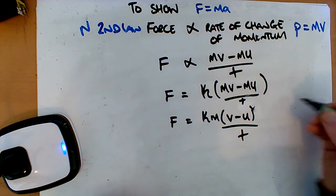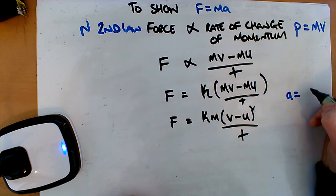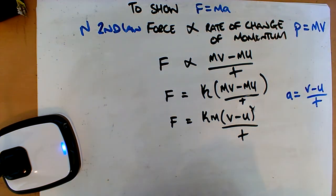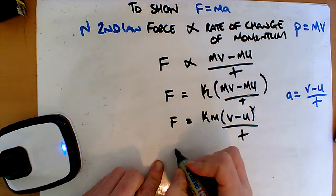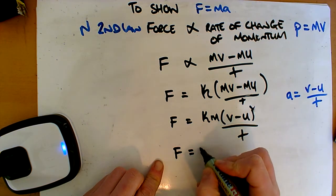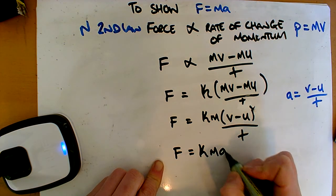If we remember, that was what our definition of acceleration was. Acceleration is the rate of change of velocity, V minus U over T. That's all that this is, the rate of change. So we now have F is equal to K, M, A.